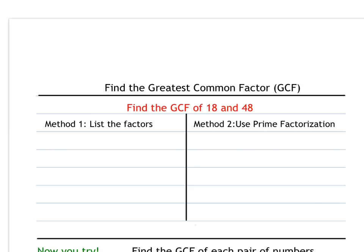There are two methods to find the greatest common factor. One is to list the factors. If I'm looking for the GCF of 18 and 48, I list 18's factors — the numbers that multiply to get 18. So: 1 times 18, 2 times 9, 3 times 6. Four and five don't work. So my factors of 18 are 1, 2, 3, 6, 9, and 18.